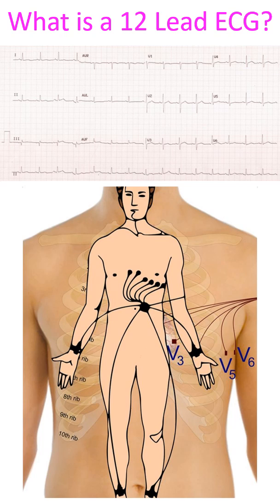Even though not part of the standard 12 leads, V7, V8 and V9 are sometimes recorded along the same horizontal line in the posterior axillary line, scapular line and paraspinal region respectively. Right-sided chest electrodes are recorded on the corresponding sides on the right hemithorax and named as V3R, V4R, etc.